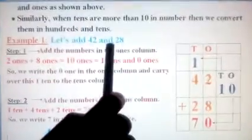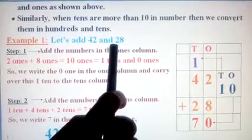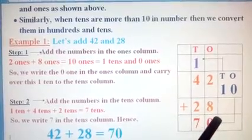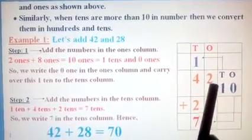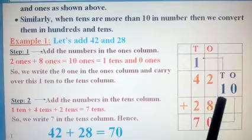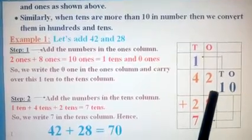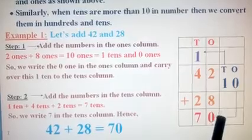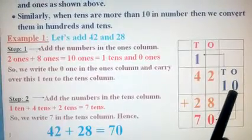Now, as I told you earlier, you are going to start adding only the ones column. So you are going to add 2 plus 8. What is 2 plus 8? 2 plus 8 is 10. Isn't it? See here, I have written here 10.